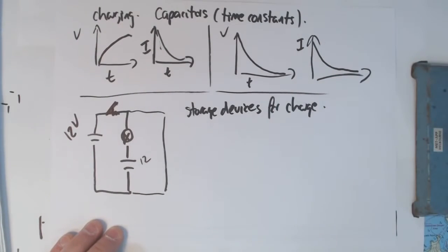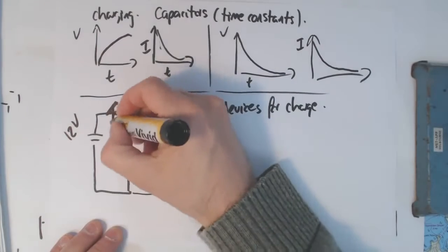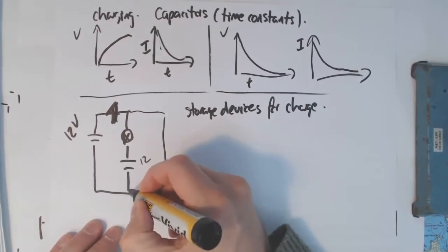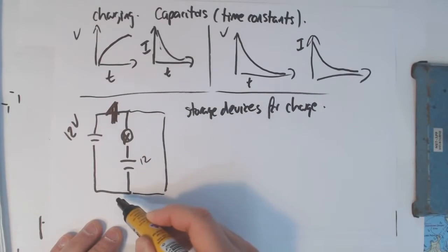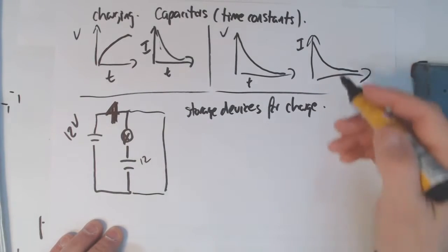The current starts off quite high, because when you first open up the circuit here and break that and connect this one, the charge is high. The voltage is high. But as it goes through the lamp and discharges, the voltage gets less. So the current drops.